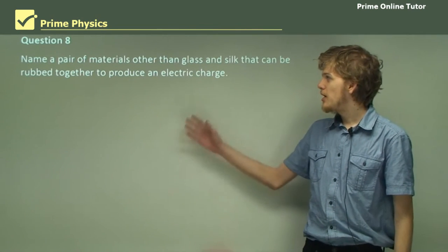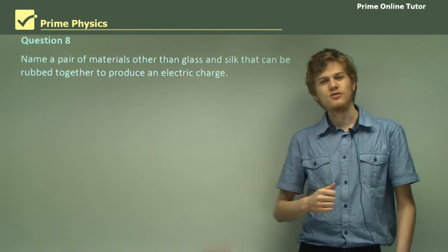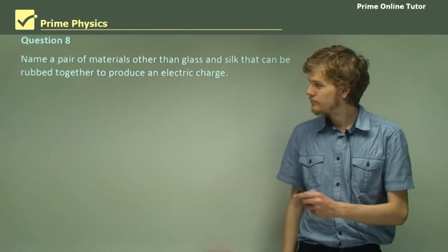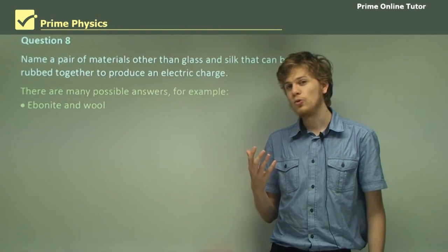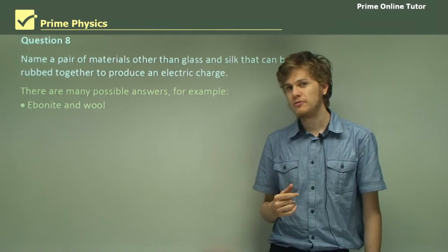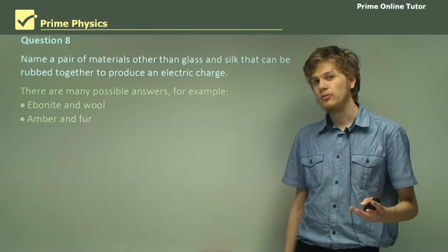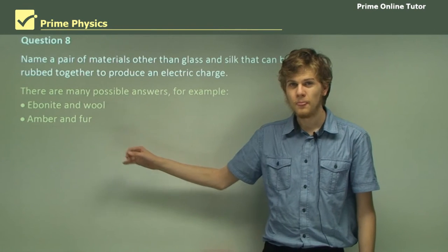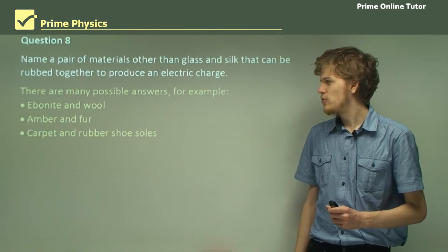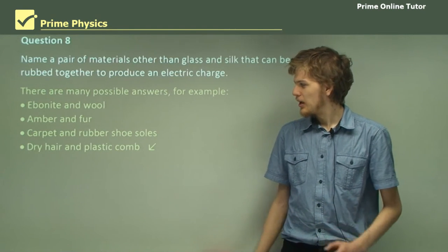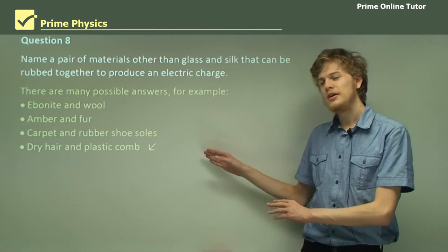Question 8: Name a pair of materials, other than glass and silk, that can be rubbed together to produce an electric charge. There are a whole number of these. One possible answer is ebonite and wool — the ebonite picks up a negative charge and the wool picks up a positive, so it's the opposite of glass and silk. Another example is amber and fur, which is what electricity is named after. Carpet and rubber-sole shoes are the cause of many an accidental electric shock. Dry hair and a plastic comb can sometimes cause crackling or sparking.